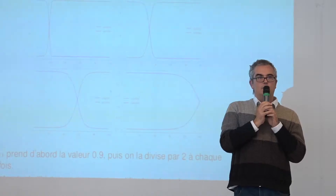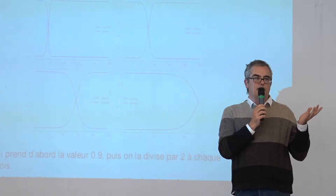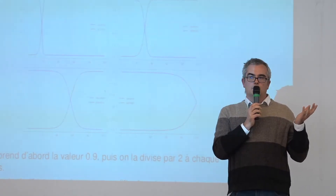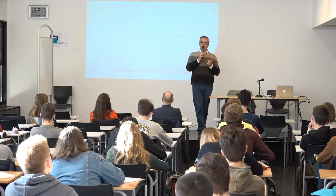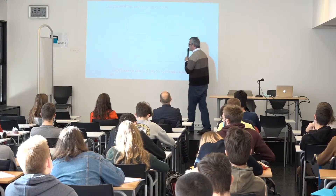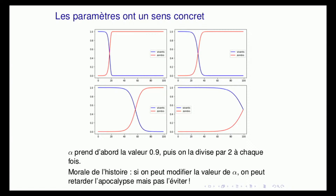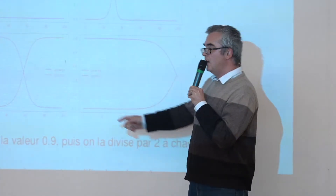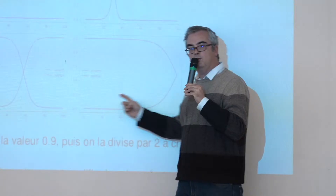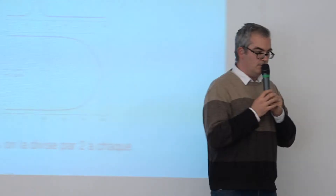La morale de cette histoire : on se fout des zombies, ce n'est pas la réalité. Mais ça nous montre que construire ce modèle mathématique nous a fait comprendre que le paramètre alpha a un rôle important. Dans tous les films de zombies, les humains se rassemblent, essayent de combattre les zombies, et la scène finale c'est l'assaut des zombies contre le dernier bastion des humains — l'apocalypse. Ils ont repoussé l'inéluctable, mais l'inéluctable arrive toujours — ce à quoi on s'attend vu les lois qu'on a mises.